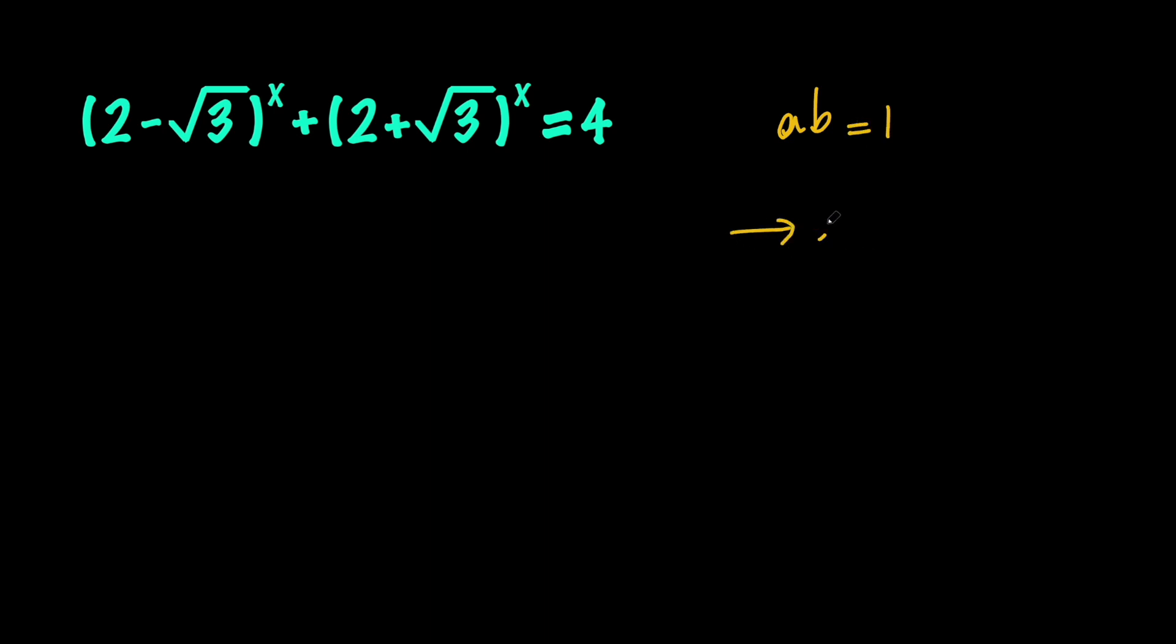notice that whenever we have a product of two numbers like a and b and the product equals 1, we can go ahead and say that they are reciprocals. So a equals 1 over b. So keep this in mind. We're going to use this. So the thing is, once we go ahead and take 2 minus root 3 and multiply it by 2 plus root 3, we're going to get 1.